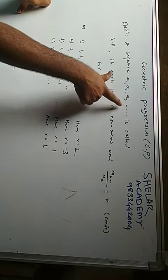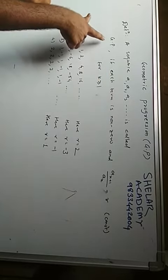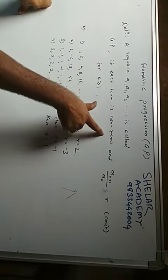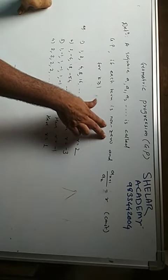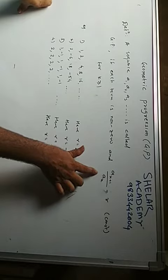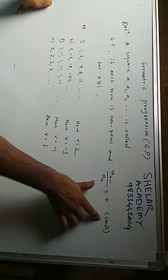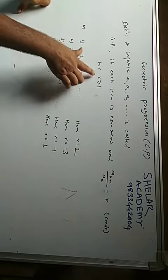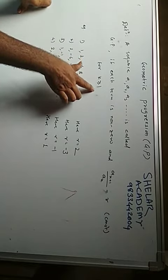The sequence is called GP if each term is non-zero, there is no zero term, and the ratio between two consecutive terms is a constant, i.e. R. We call it R.